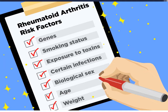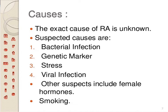People who are prone to get this disease include those with a genetic factor, smoking status, exposure to toxins, and repeated infections. Biological sex, age group, and weight are also risk factors. The causes include an unknown or idiopathic origin, bacterial infection, and genetic markers — if parents or forefathers had arthritis, there is a chance it passes to offspring. Other causes include stress, viral infection, hormonal imbalance particularly in females, and smoking.